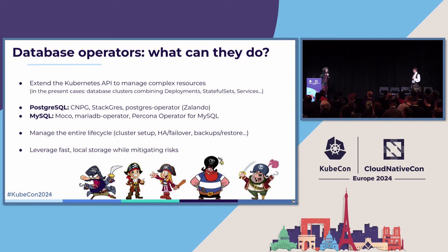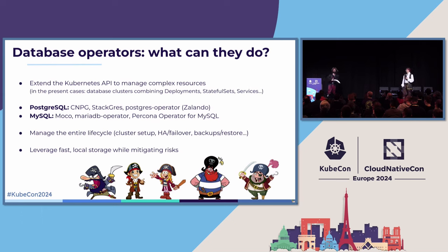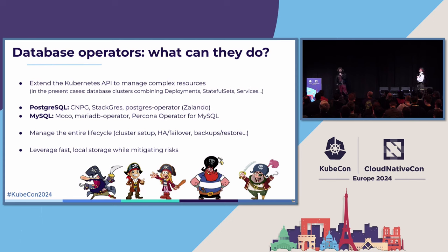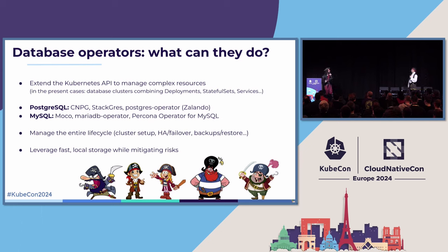Another thing that is pretty cool with operators — even if you are a seasoned DBA — is leveraging local storage safely. Whether it's in the cloud or on-prem, there is often this dual thing: am I going to use my local disks, which are super fast, but if I lose the machine I lose the data? Or am I going to use remote disks like EBS or Ceph, which feels safer because it's replicated, but it's much, much slower. So if you have something that deals with replication and backups, it feels safe to use local disks, and sometimes that results in absolutely tremendous performance improvements.